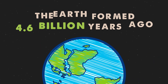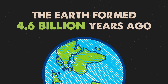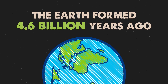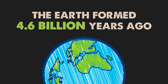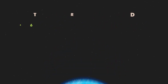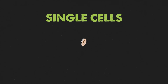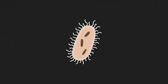The Earth formed 4.6 billion years ago. Scientists find it hard to know exactly when the first living things appeared on Earth, but what they do know is that they started from single cells — the building blocks that make up all living things. Cells are so small you can only see them under a microscope.